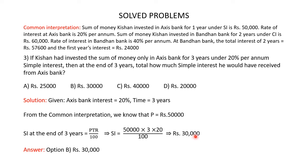So Kishan would have received a simple interest of Rs 30,000 from Axis Bank at the end of 3 years. The correct answer is option B, Rs 30,000.